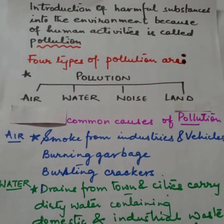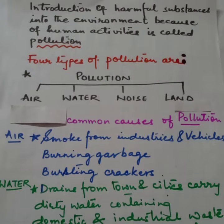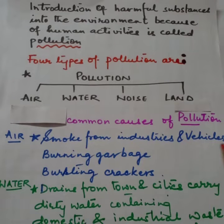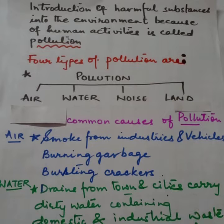Next is water pollution. Drains from towns and cities carry dirty water containing domestic and industrial wastes. Fertilizers and pesticides from agricultural fields also cause water pollution. तो हमारे घरों से जो sewage water जाता है — बर्तन धोना, कपड़े धोना — ये सब पानी और factories से जो chemical मिला हुआ पानी, ये जब नदियों में जाते हैं, तो वो पानी को दूषित कर देता है।